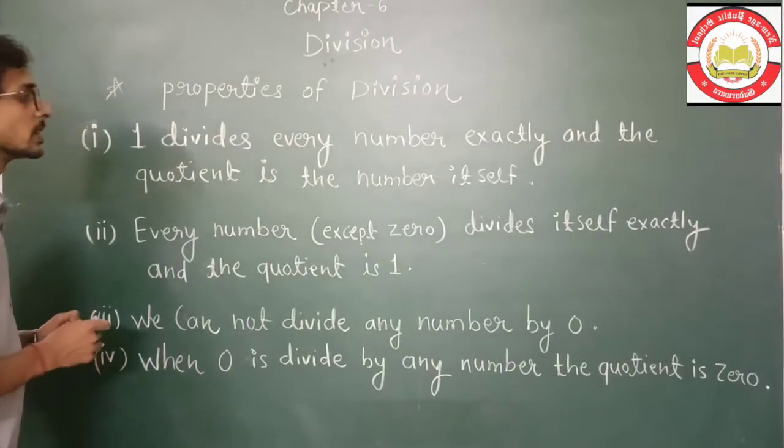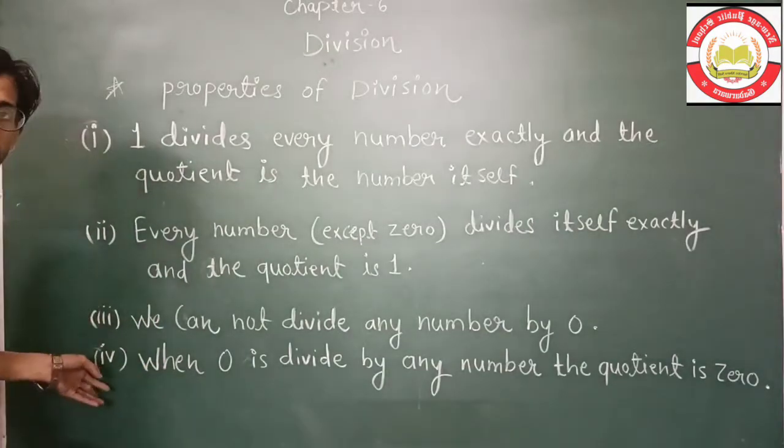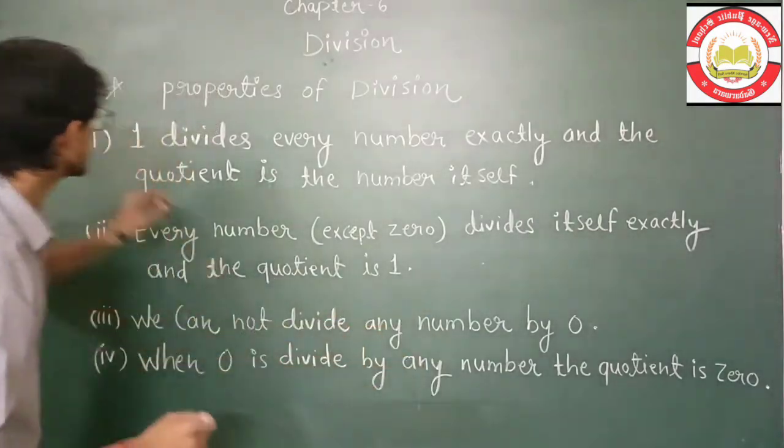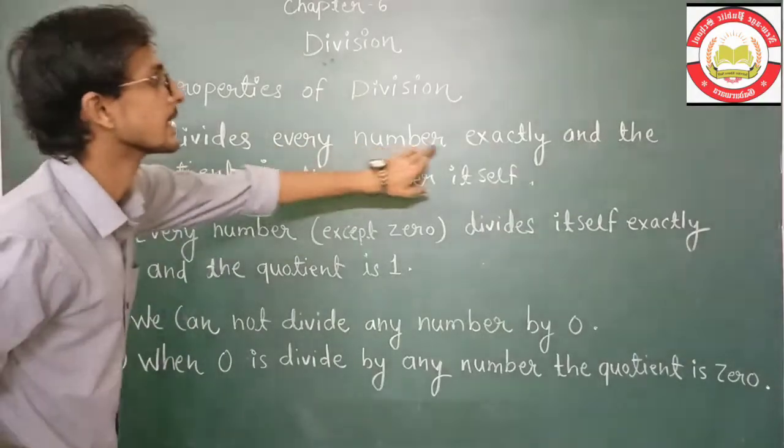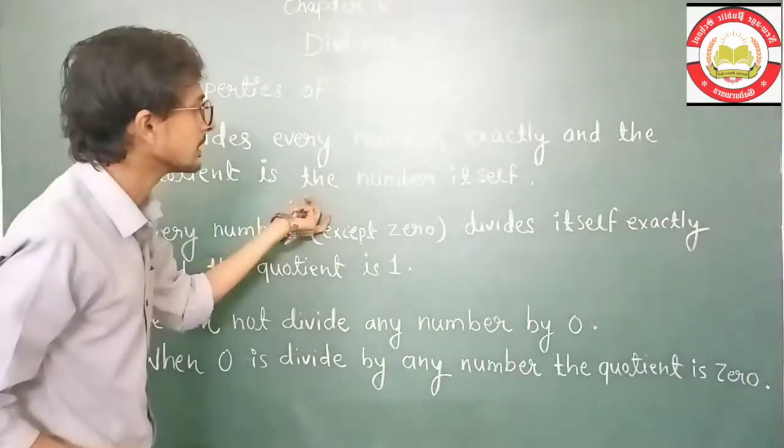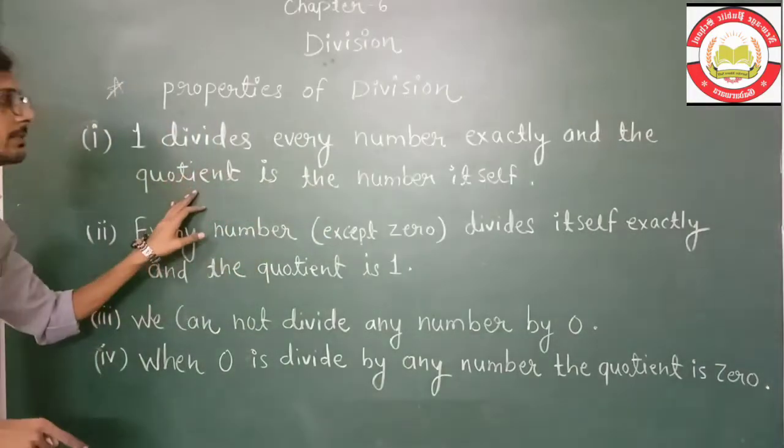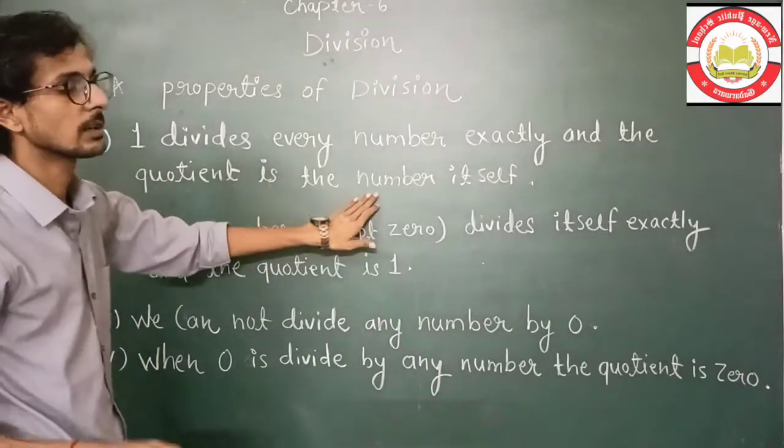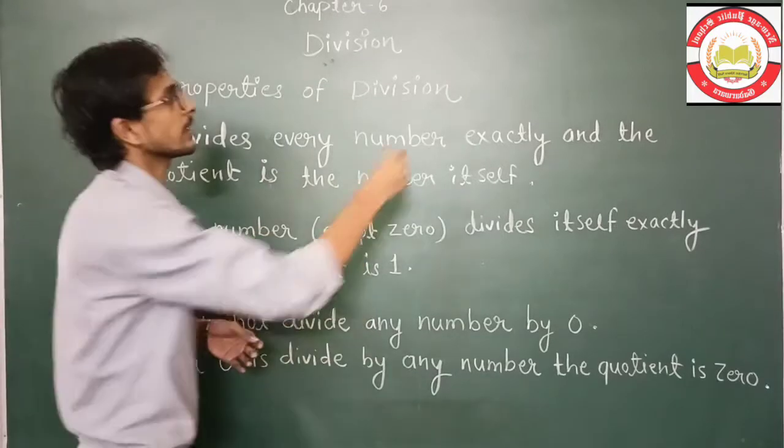So properties for division, here are four properties of division. So first property is, one divides every number exactly and the quotient is the number itself. Kisi bhi number ko 1 se divide karenge to answer wahi number hoga. Say for example,